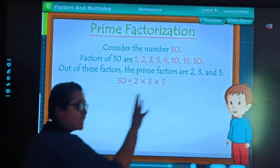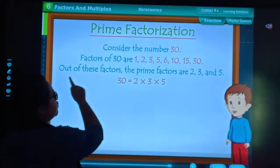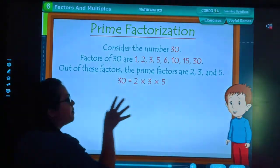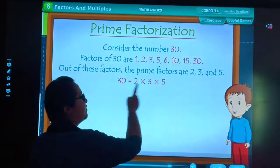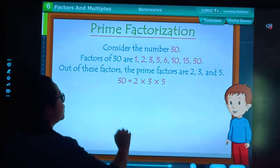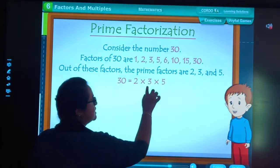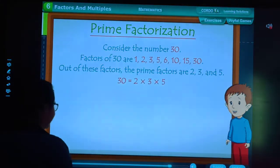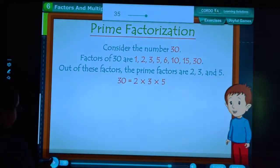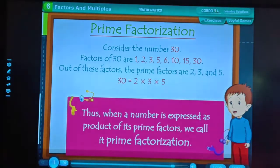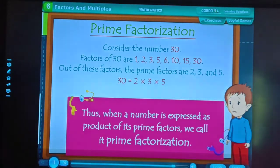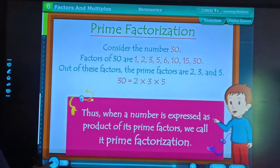Out of these factors, the prime factors are 2, 3, and 5, which are prime numbers. 2 times 3 is 6, 6 times 5 is 30. So 30 equals 2 into 3 into 5.